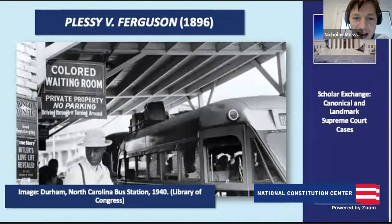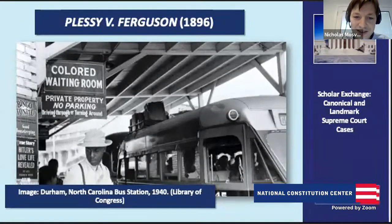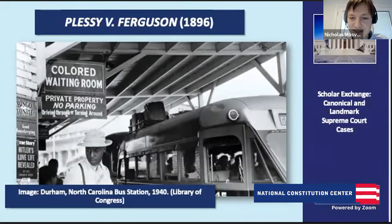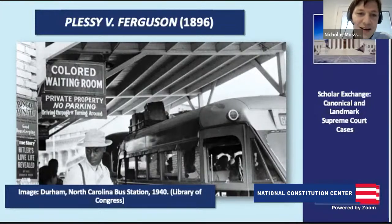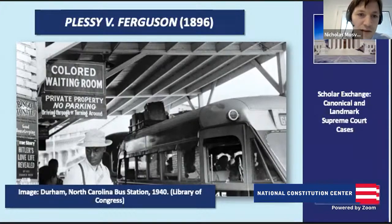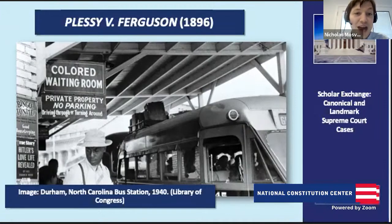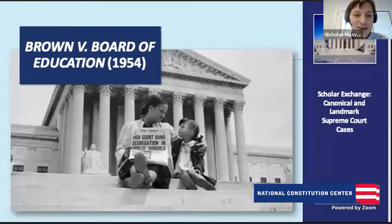Harlan writes: 'In the eye of the law, there is in this country no superior dominant ruling class of citizens. There is no caste here. Our Constitution is colorblind, neither knows nor tolerates classes amongst citizens. In respect of civil rights, all citizens are equal before the law.' That idea takes a very long time to win out, but eventually Brown v. Board is the victory of Harlan's view of the Constitution. He's the lone dissenter, but nearly 60 years later he wins out in Brown v. Board of Education, which is a unanimous nine-to-zero decision.